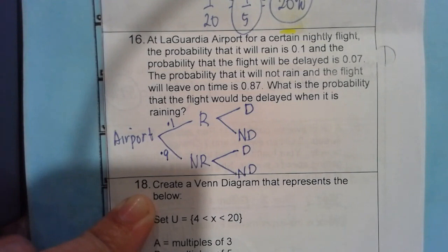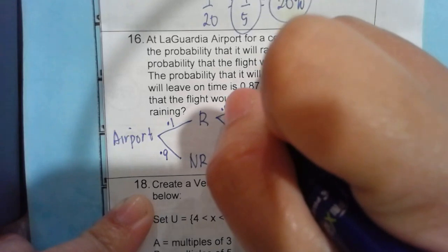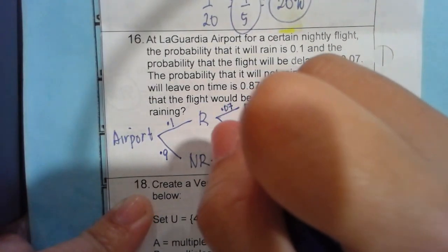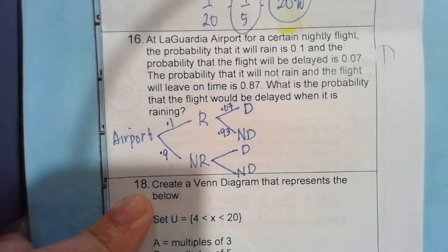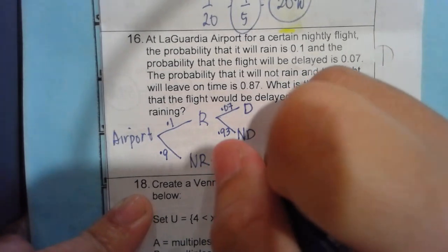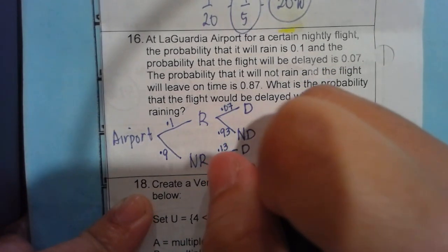So, a chance of being a delay given that it's raining is 0.07. So not delay would be 0.93. For the delay, there's a chance of getting 0.13 and this is for 0.87.